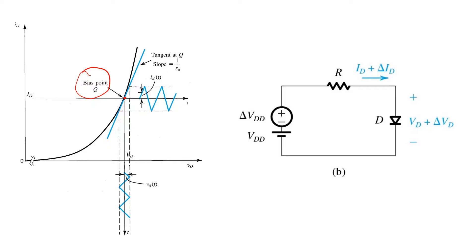In this case, the bias point Q can be determined by an analysis where delta VDD, delta ID, and delta VD are equal to zero. Setting those variables, those small signal quantities, to zero will result in the simple circuit that we started with. And we can apply all the usual techniques for solving it.